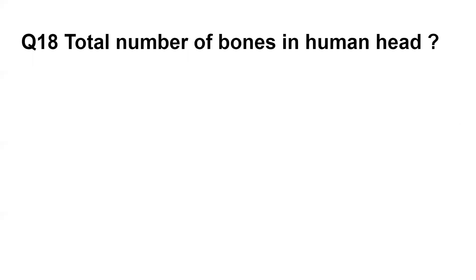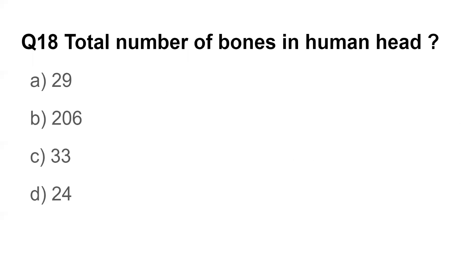Question number eighteen: Total number of bones in the human head — options are 29, 206, 33, and 24. The answer is 29, mainly cranial bones.